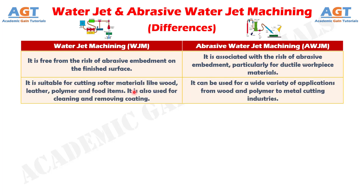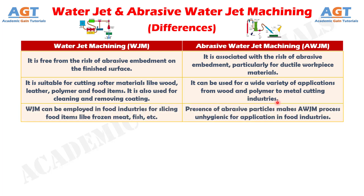Number 7: Water jet machining is suitable for cutting softer materials like wood, leather, polymer, and food items. It is also used for cleaning and removing coatings. Whereas, abrasive water jet machining can be used for a wide variety of applications, from wood and polymer to metal cutting industries. Number 8: Water jet machining can be employed in food industries for slicing food items like frozen meat, fish, etc. Whereas, the presence of abrasive particles makes abrasive water jet machining unhygienic for application in food industries.